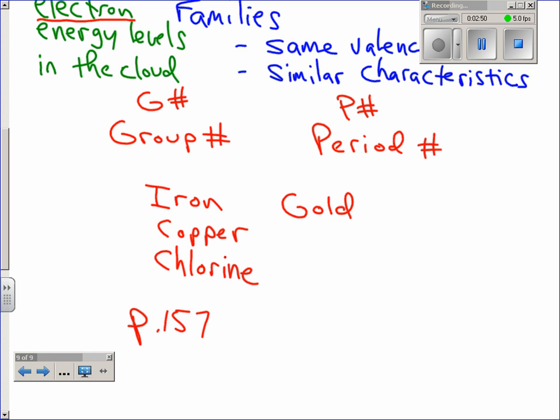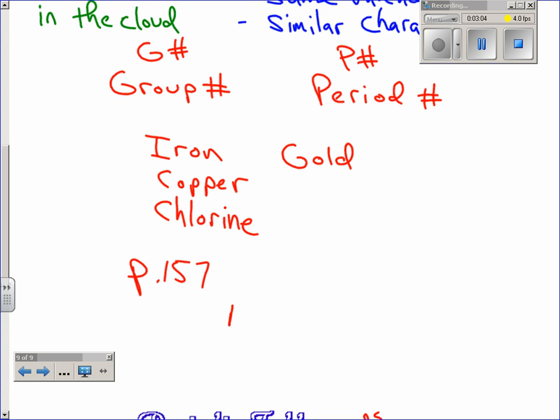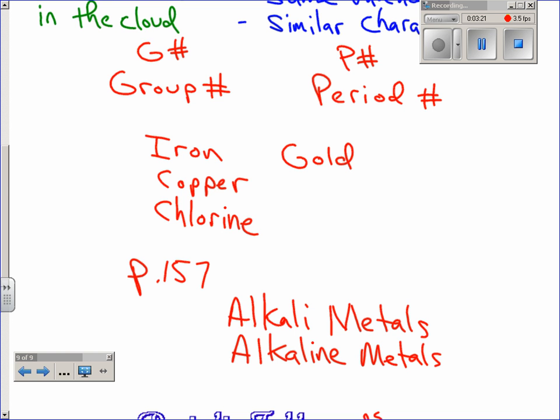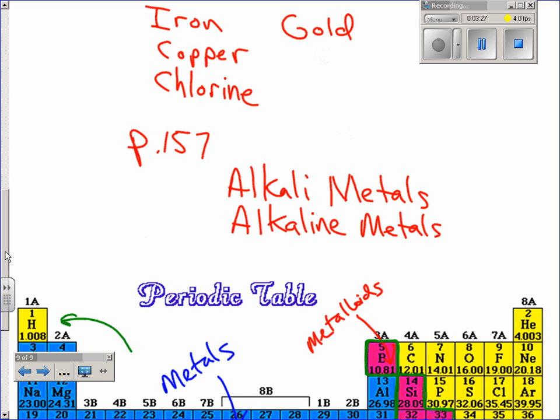I would like for you to read about four particular families. And here are the names of those four families I would like you to read about. The alkali metals, the alkaline metals, halogens, and one more, the noble gases.